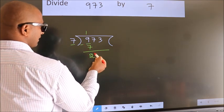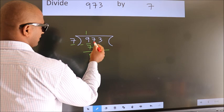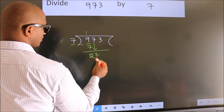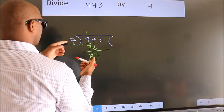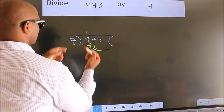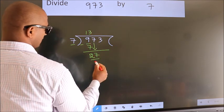After this, bring down the beside number. So 7 down, so 27. A number close to 27 in the 7 table is 7 threes, 21.